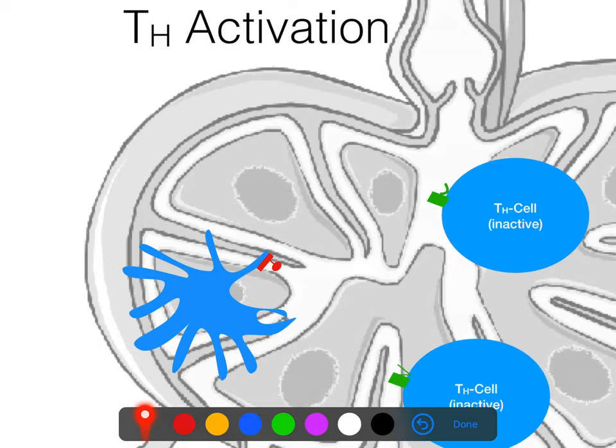This dendritic cell bumped into this virus, ate the virus, and then it's displaying the viral antigens on its MHC2 right here. And then it needs to go tell somebody about this, so it went off to a lymph node where it's going to meet up with a bunch of lymphocytes.